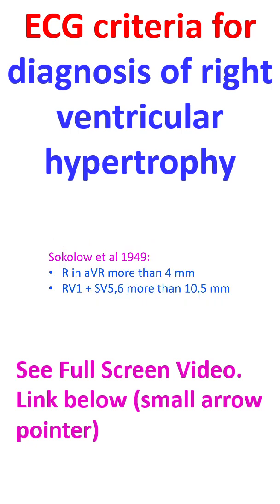All of us are quite familiar with the Sokolow et al criteria for left ventricular hypertrophy. Criteria for right ventricular hypertrophy were also proposed by them in 1949. They were tall R in aVR more than 4 mm and R V1 plus S V5 or V6 more than 10.5 mm.